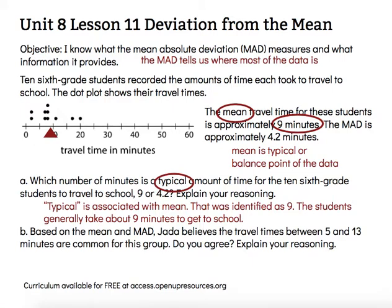So the nine minutes is our mean, or typical value. That means, in general, it takes the students nine minutes to get to school.